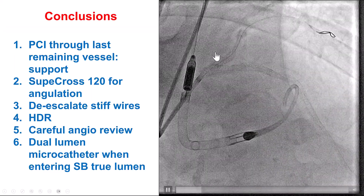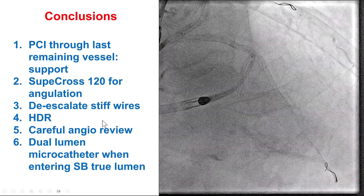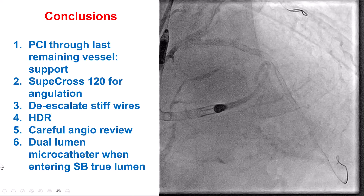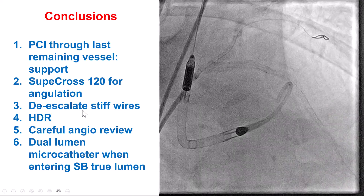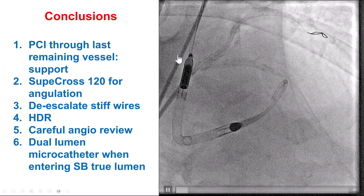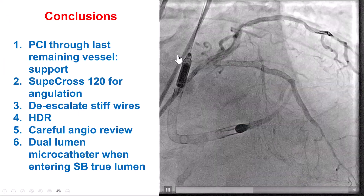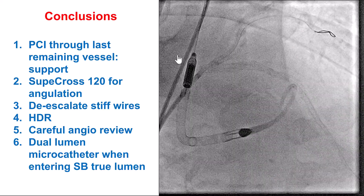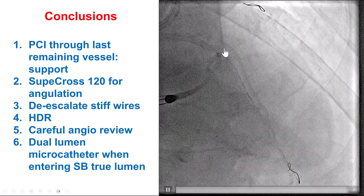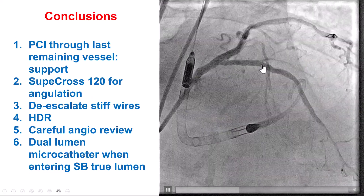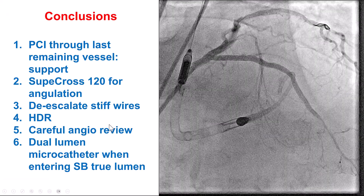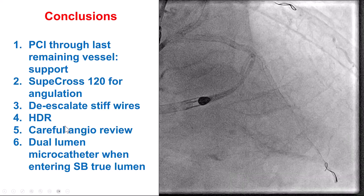We used wire escalation with the Gaia Next 2, but as soon as we got into the occlusion, we advanced the microcatheter, removed the Gaia, and de-escalated to a polymer-jacketed Gladius Mongo wire. HDR was, in the end, the key in this case. We were unable to knuckle a wire, performed HDR, and then the first wire after HDR went into the septal — which retrospectively was in the true lumen. Although it took a while to complete the subintimal re-entry, eventually we came back and were able to advance a wire in the true lumen into the LAD.